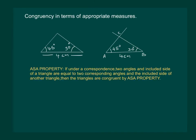Hence, we now state the ASA property: if under a correspondence two angles and the included side of a triangle are equal to the corresponding angles and the included side of another triangle, then the triangles are congruent.